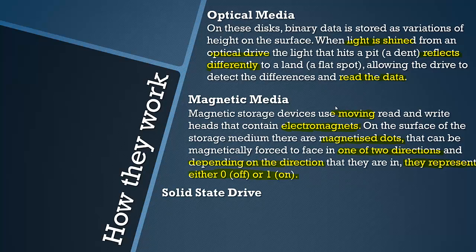An example of magnetic media is hard drives, and these are mechanical because the head is moving at high speed to read so much data. It has to magnetise so many of these dots per second.